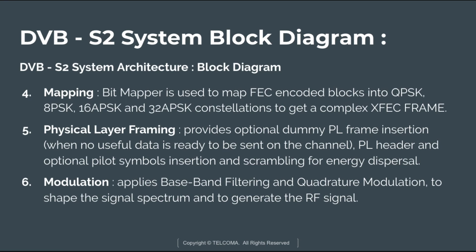Finally, modulation applies baseband filtering and quadrature modulation to shape the signal spectrum and generate the RF signal. Square root raised cosine filtering is used at the transmit side, with a choice of three roll-off factors: 0.35, 0.25, and 0.20.